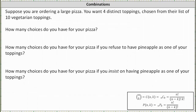There are several ways to denote a combination — we can write 10 choose 4 using different notations. Since n choose k is equal to n factorial divided by the product of (n minus k) factorial and k factorial, 10 choose 4 is equal to 10 factorial divided by the product of (10 minus 4) factorial and 4 factorial.